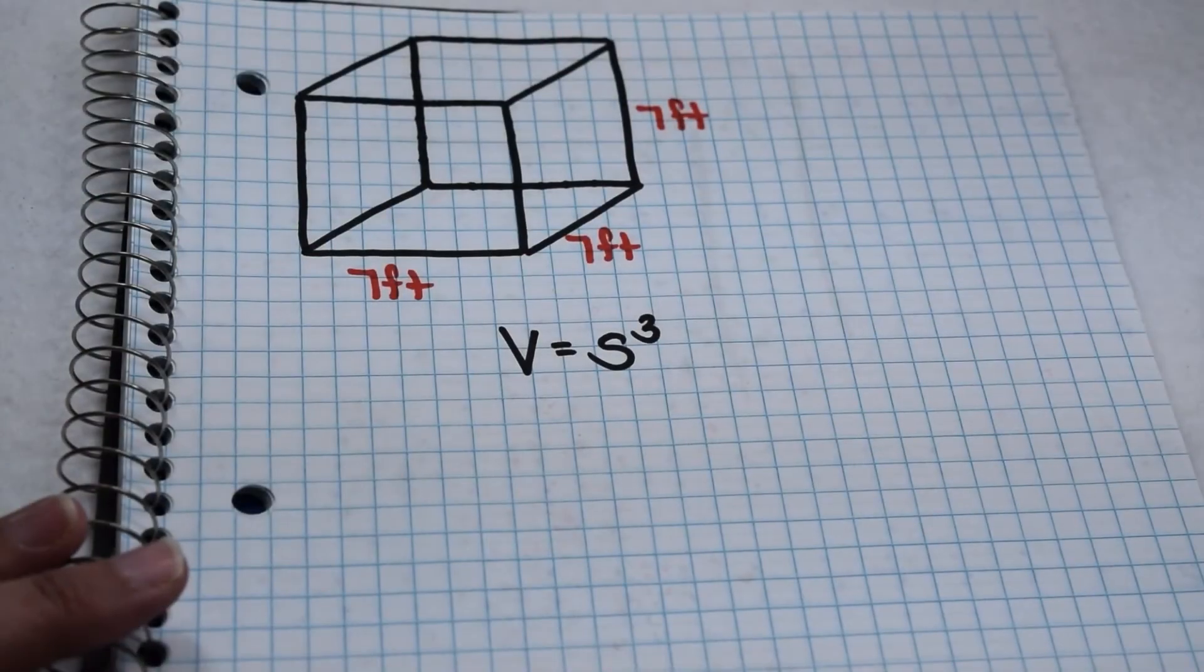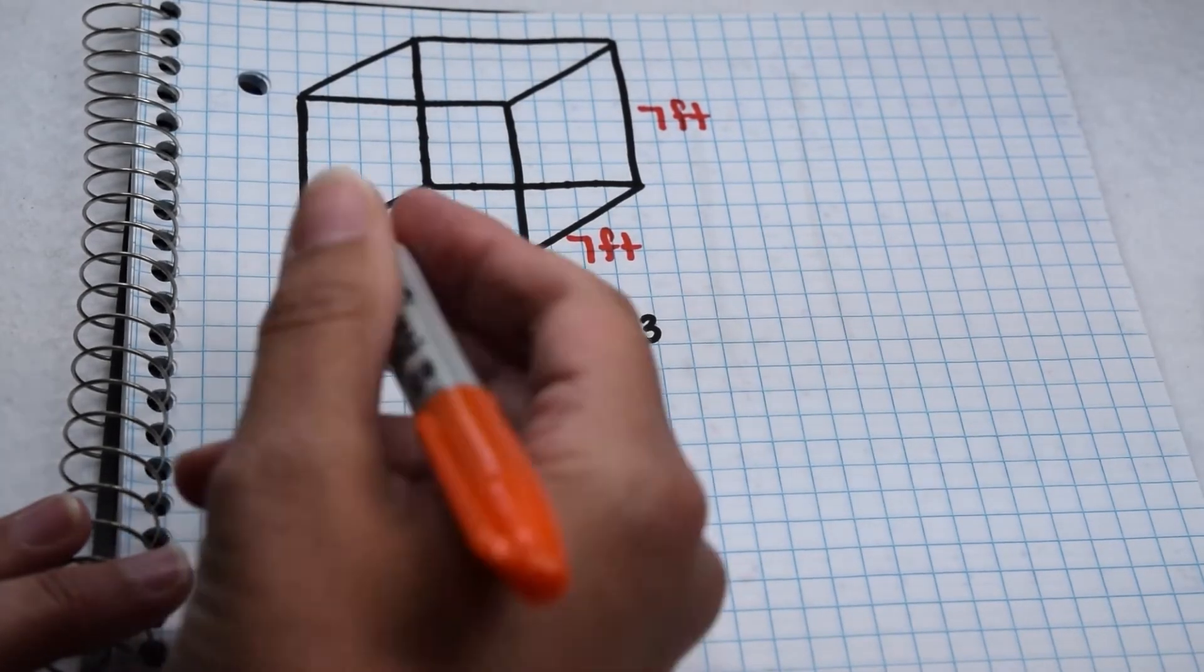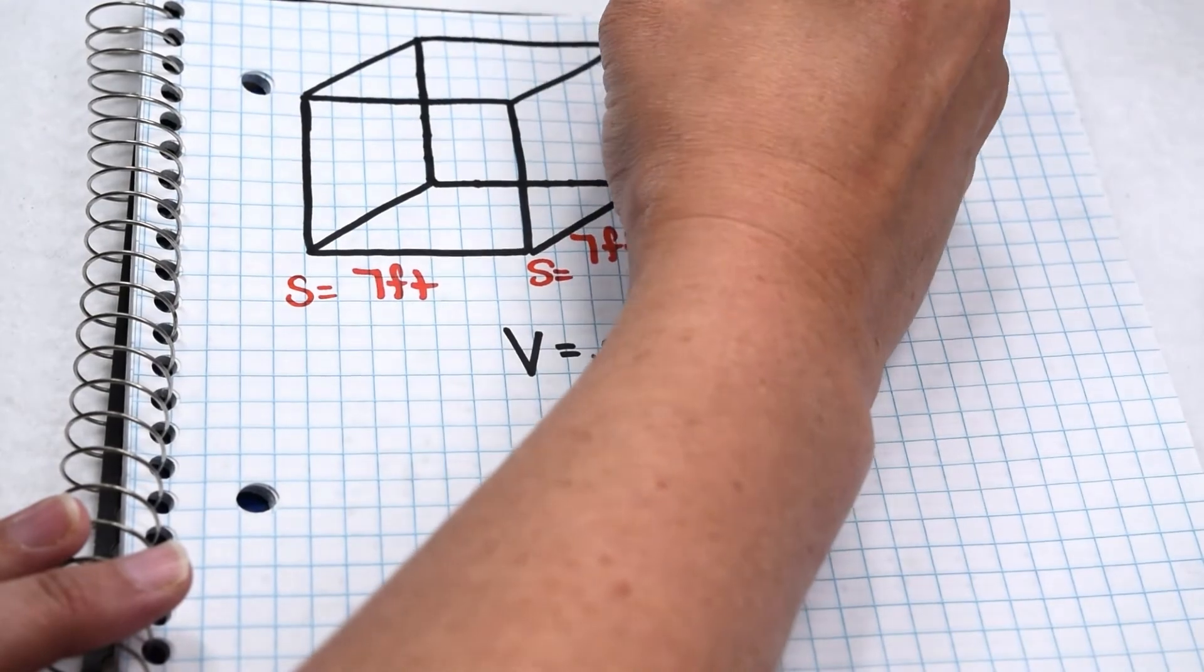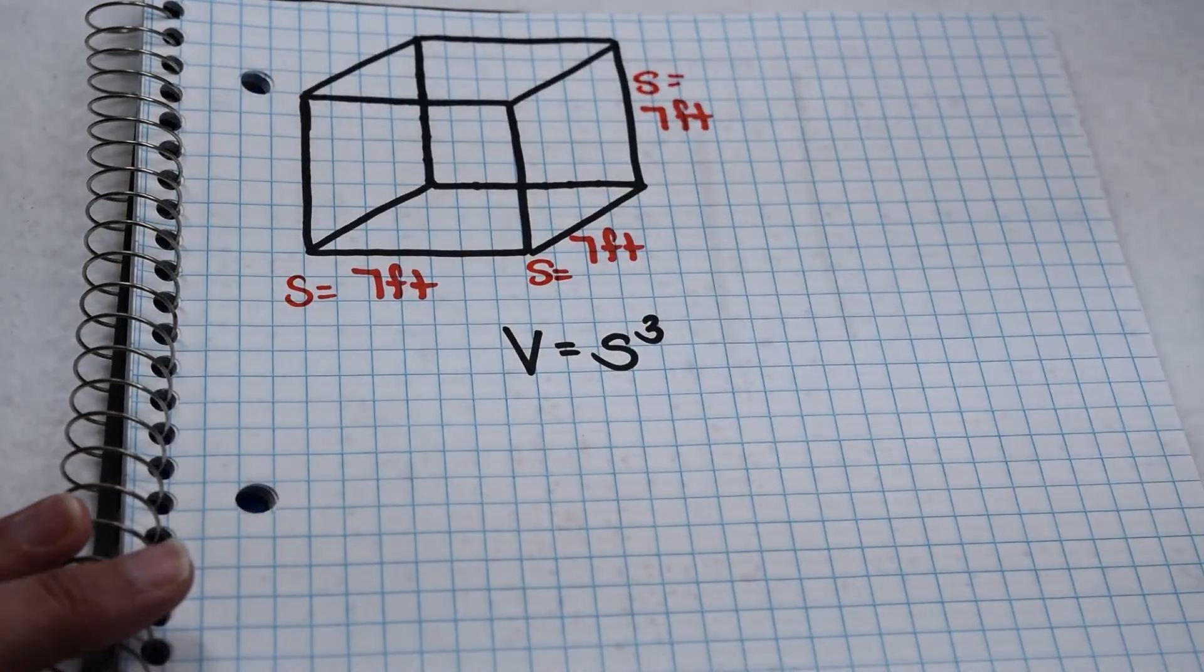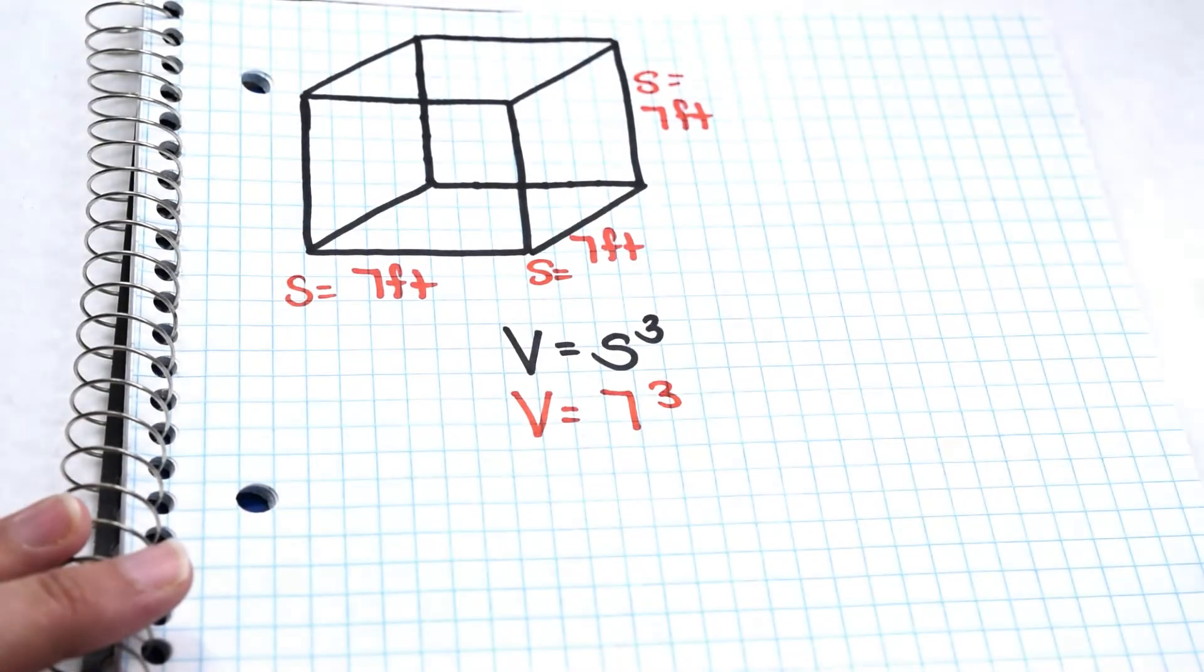Let's use our formula to find the volume of this cube. Our formula is volume is side cubed. Here we can see on this cube that each of our sides is worth 7 feet. So that means, into our formula, we can substitute that 7. So we're finding volume is 7 cubed.